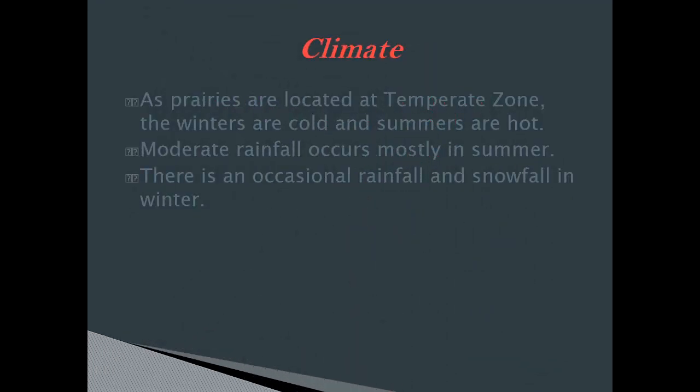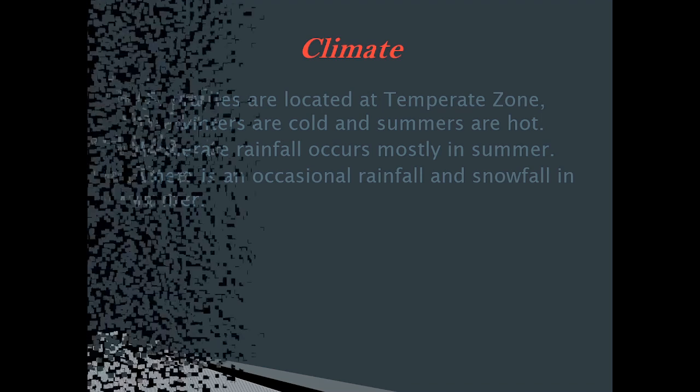Climate: As prairies are located in the temperate zone, the winters are cold and summers are hot. Moderate rainfall occurs mostly in summer. There is occasional rainfall and snowfall in winter.